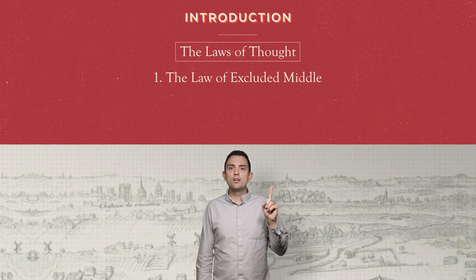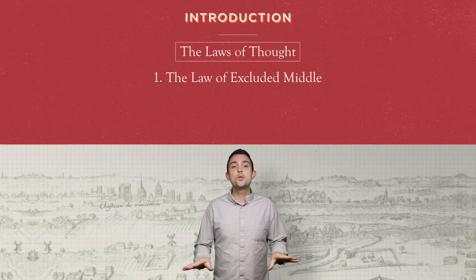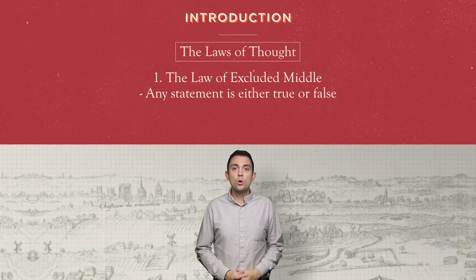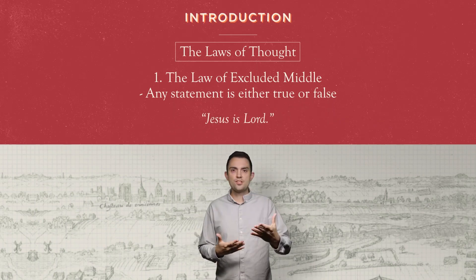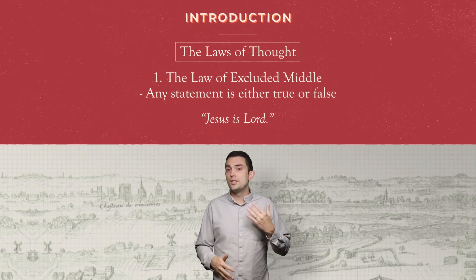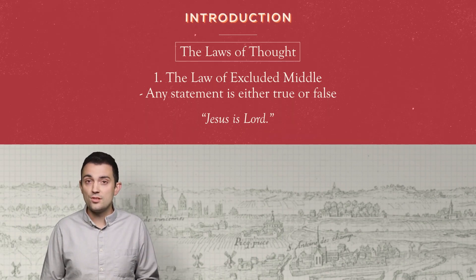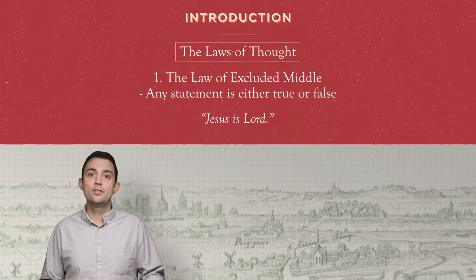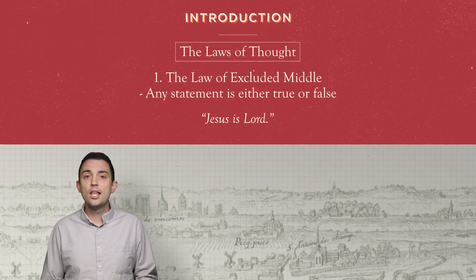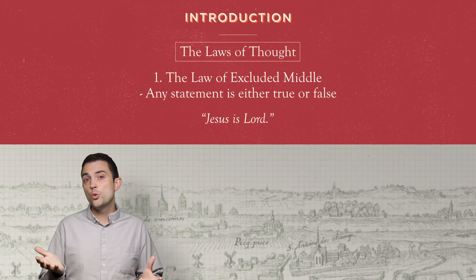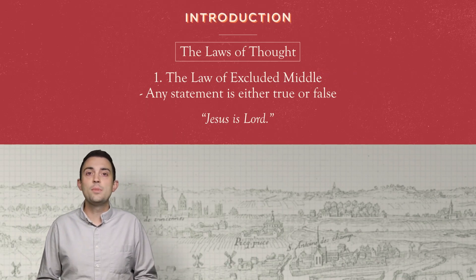First is the law of the excluded middle. The law of the excluded middle says that any statement is either true or false. Take this statement: 'Jesus is Lord.' As a statement, it's either true or it's not true — this one is true. No matter who reads 'Jesus is Lord,' he or she can either believe it or not. Those really are the only two options. Logic does not allow for a third way where something is neither true nor false. Statements are either true or not true based upon what God knows — and God knows all things.